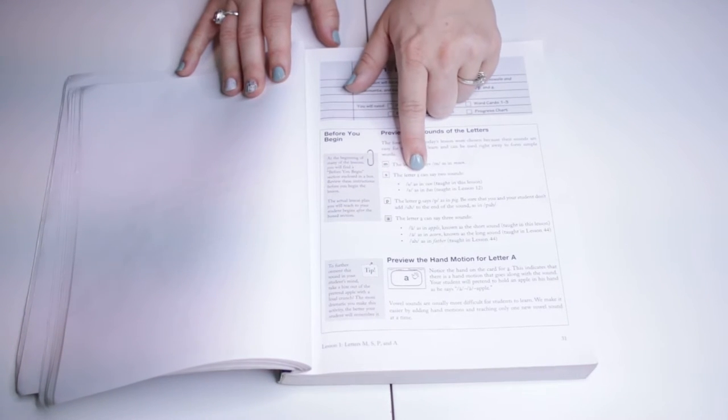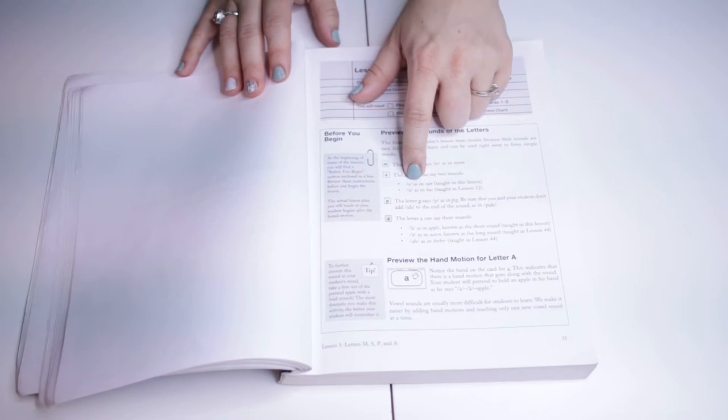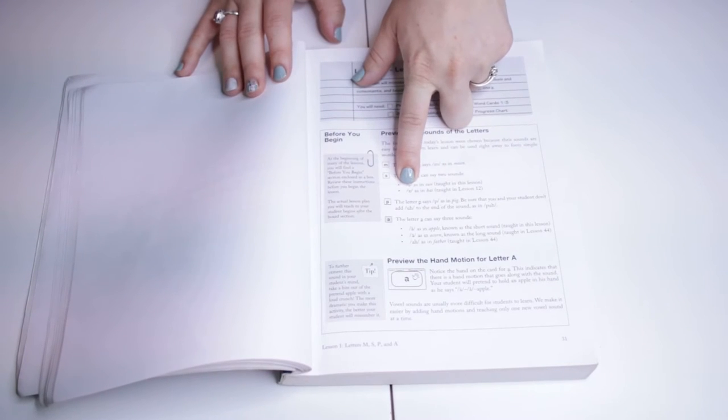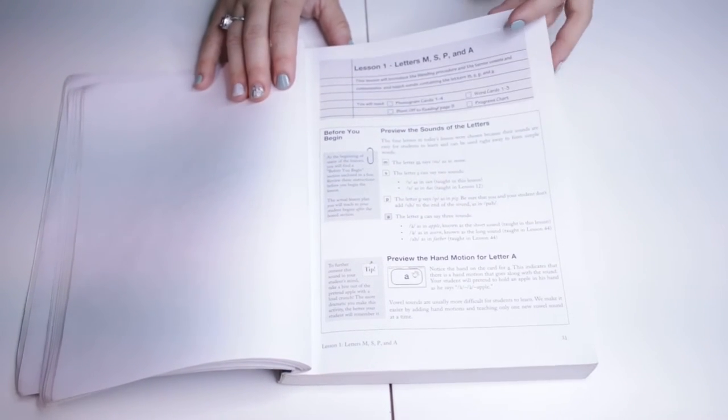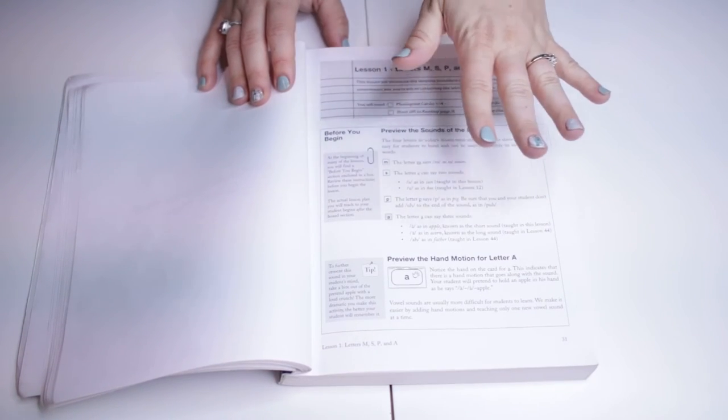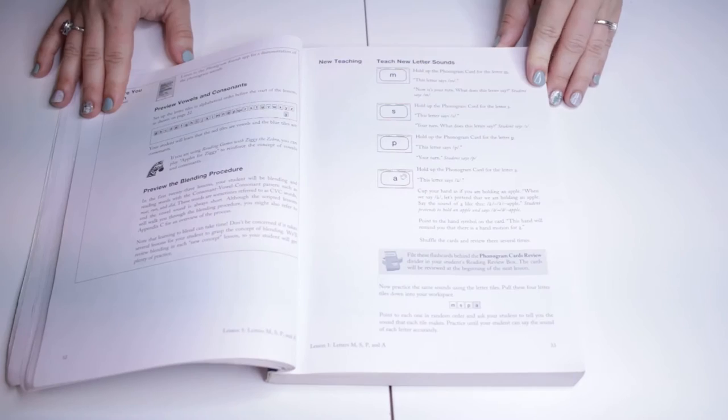It also gives helpful tips and it explains word for word what you should say. So right here it'll literally tell you to say, the letter S can say two sounds, as in son and as in has. So literally you do not have to worry about making up what you're saying or anything. This will tell you what to say.